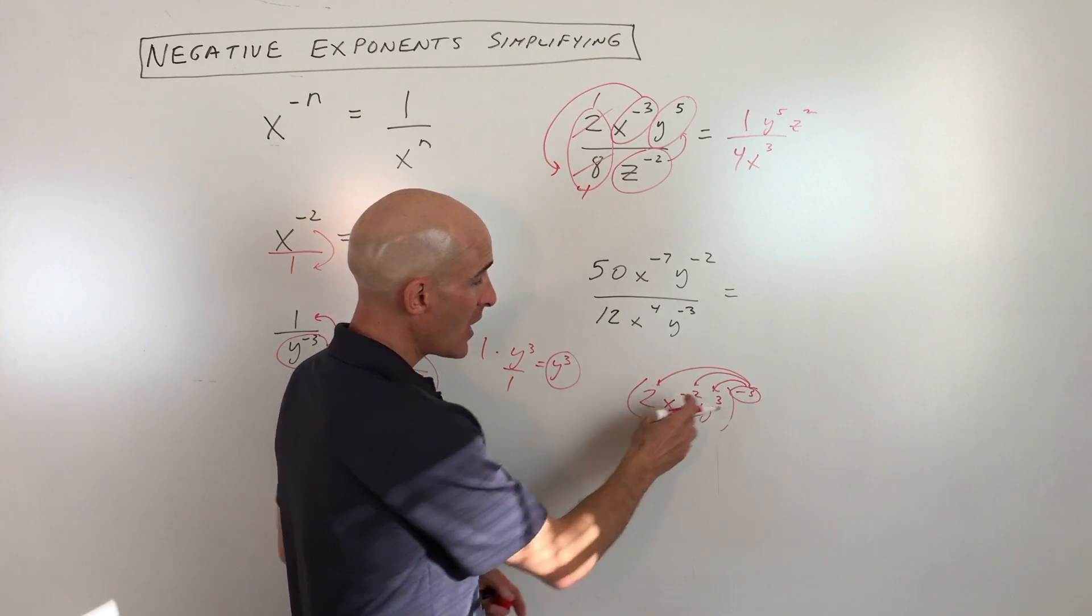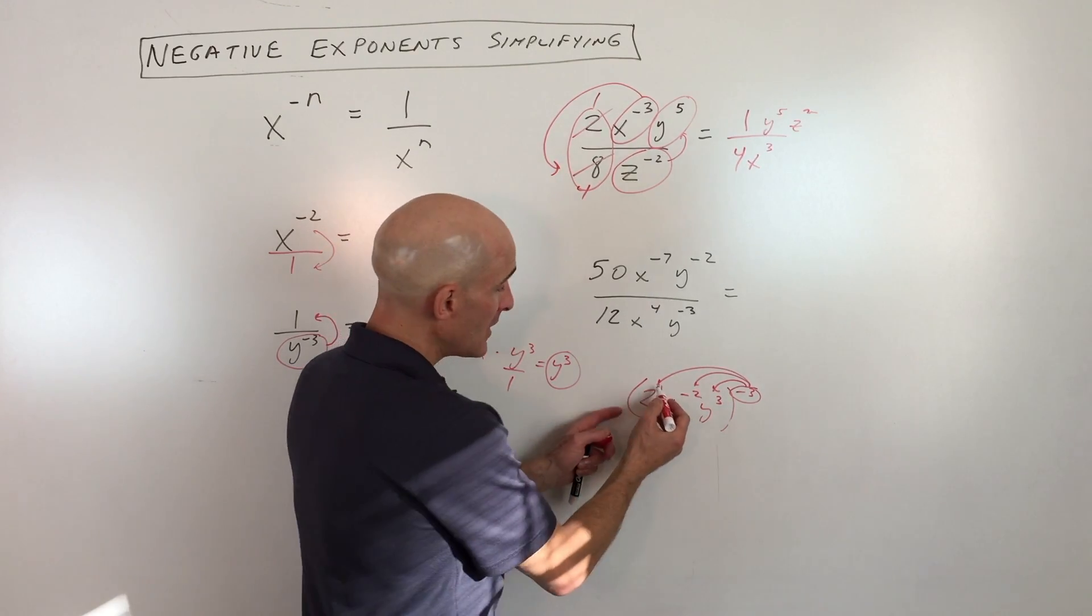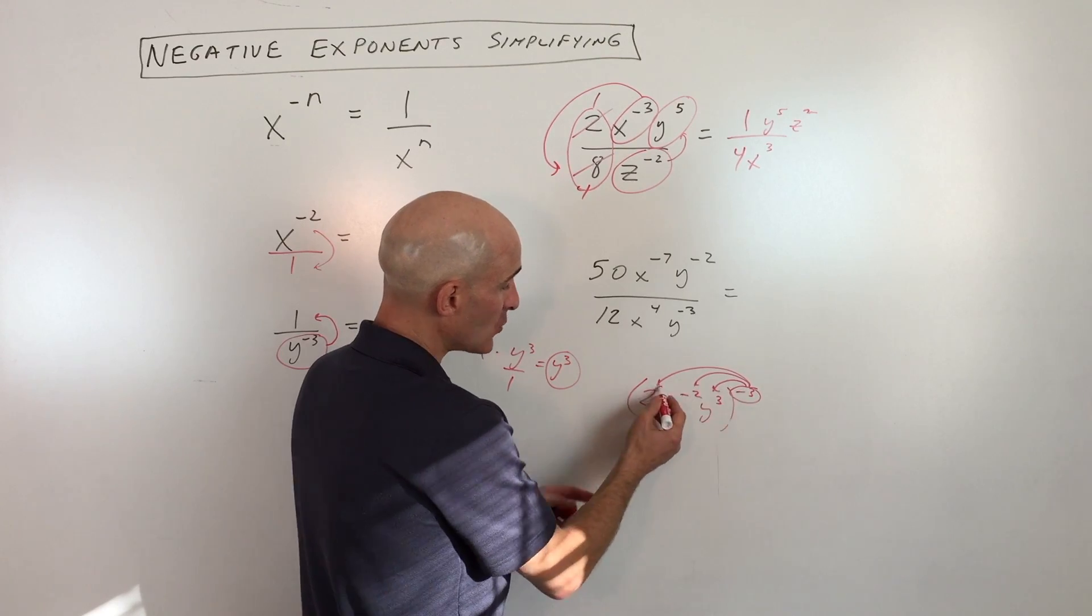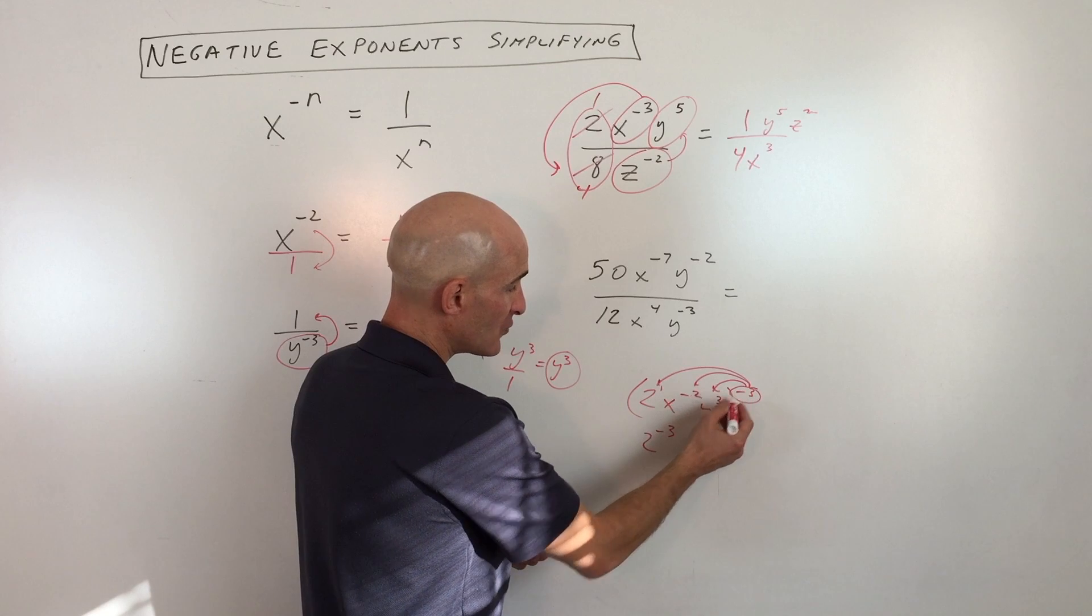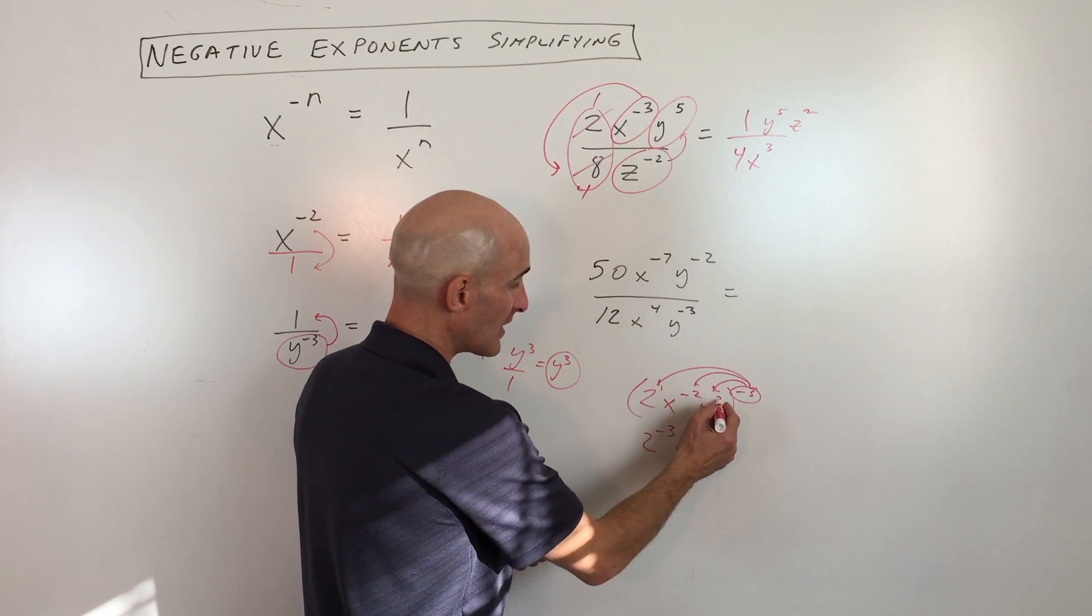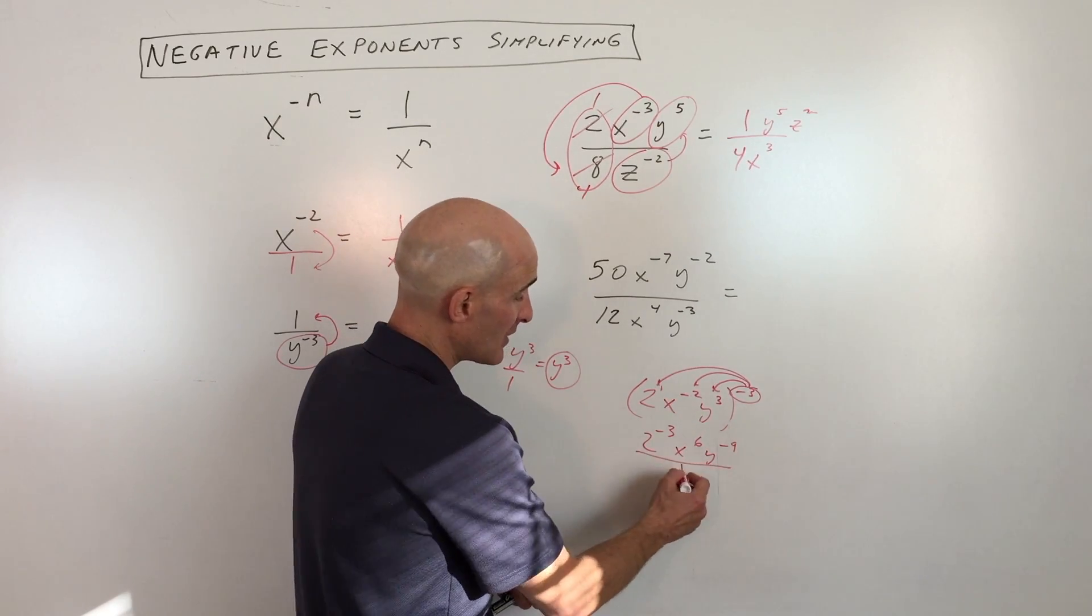Now you don't see it, but this is really like 2 to the first power. Power to a power, we multiply. So 1 times negative 3 gives you 2 to the negative third. Negative 2 times 3 gives you x to the 6th. And 3 times negative 3 gives you y to the negative 9th.